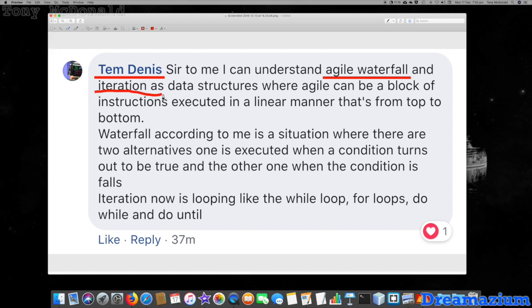Iteration as a data structure - no, iteration is explained very well down here. Iteration now is looping, like while loops, for loops, do loops. Yes, that's right. They go through iterations. One iteration is one cycle for a for loop. Two cycles for a for loop is two iterations. Data structures are things like stacks and lists. They're not agile, they're not iteration, they're something else. Where agile can be a block of instructions executed in a linear manner, that's from top to bottom - that's sequential.